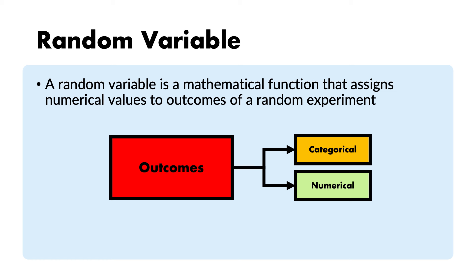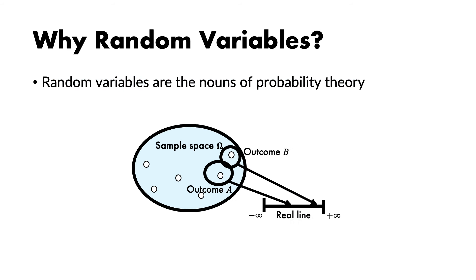In those cases, I need to assign numbers to outcomes in order to handle them mathematically. You may still ask: why do we need random variables? It is a formalism that mathematicians invented that we must respect. Random variables are like the nouns of probability theory. We need them when talking about abstract outcomes, and even when we deal with numbers, we still need to apply the concept of random variables to all our experiments.